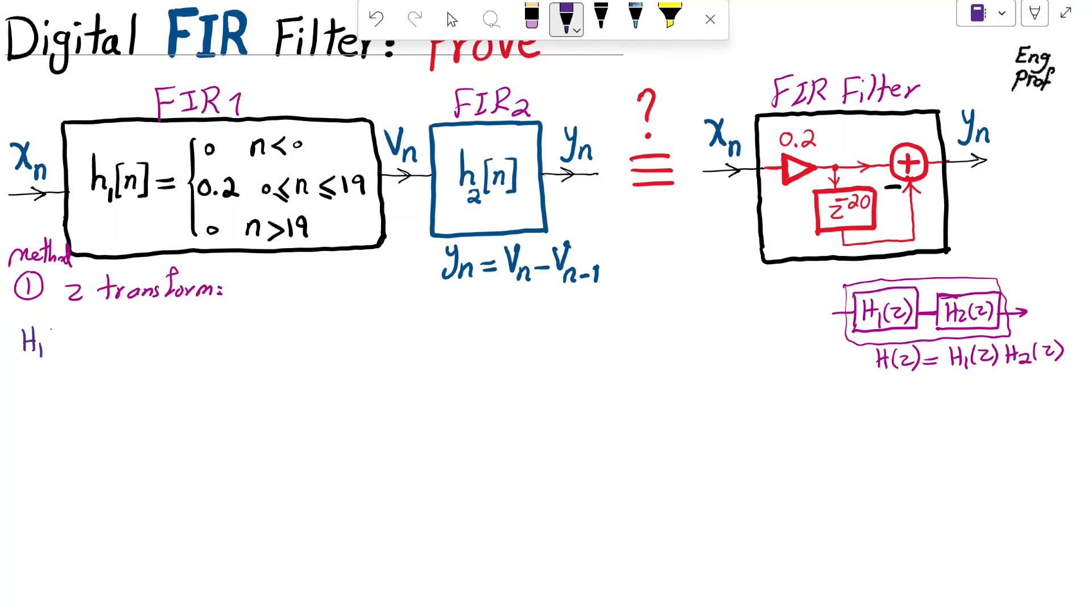H1 of Z is the Z-transform for H1 of N, which means sigma from N equal to negative infinity to plus infinity and then H1 of N and Z to the negative N. I'm just going brute force. Of course, you can see that for any negative indices, H1 is 0. So I don't care about negative values. I'm going to just say sigma N equal to 0.